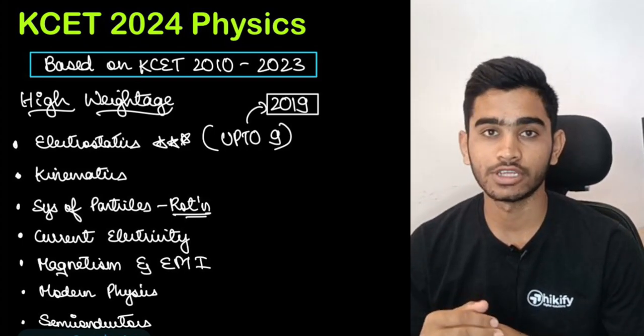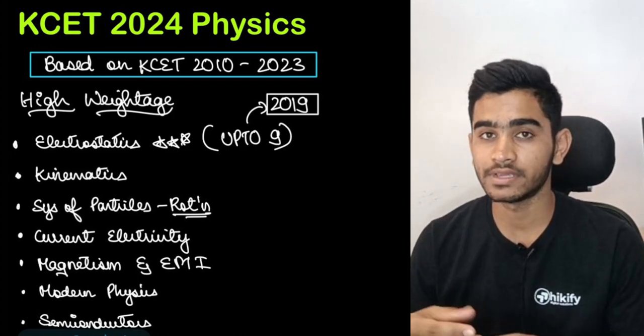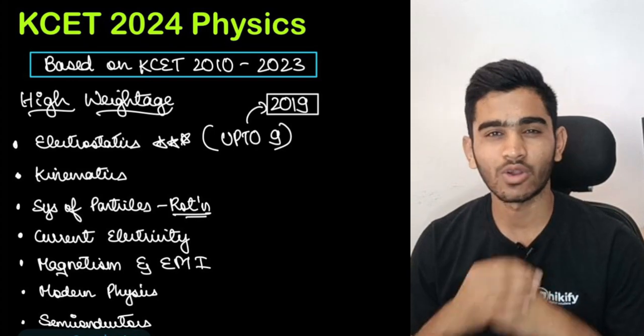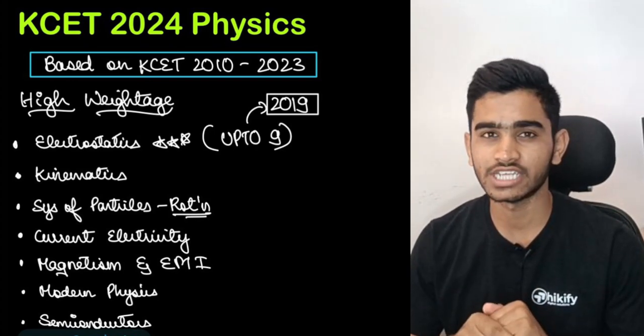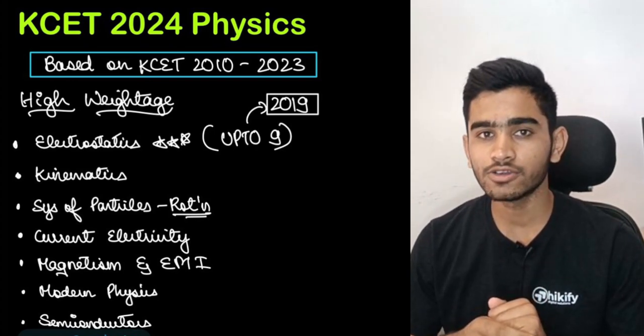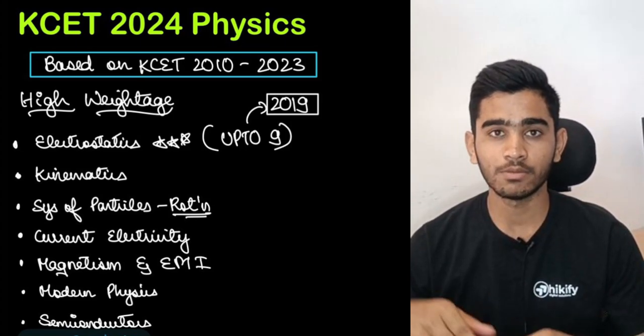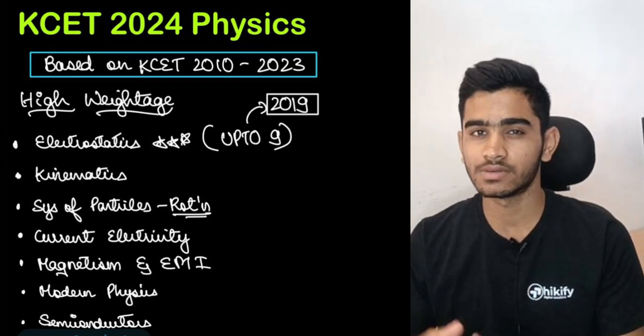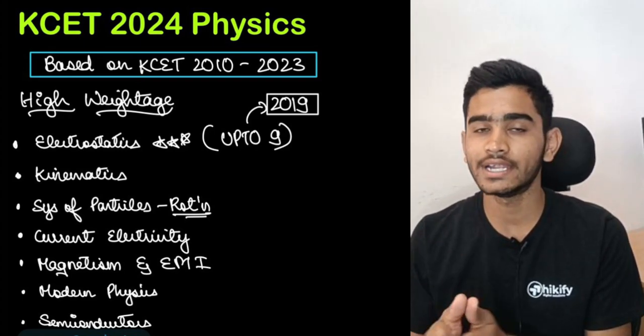Then comes the system of particles and rotational motion or the rigid body dynamics or the arena of rotational motion wherein you will be studying a lot of things about rotation, moment of inertia and many things like that. And again here you should be knowing the formula for moment of inertia of certain standard bodies and through that you will be able to solve some questions which will be related to proportionality.